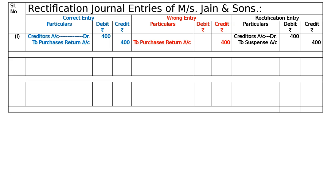Purchase returns not entered in the ledger, now rectified. Second one: Rs. 5100 spent on legal expenses for a newly acquired building was debited to the building account. The correct entry is legal expenses — building account debited to cash account. By mistake it was legal expenses account debited to cash account, 1,500.